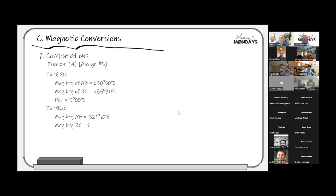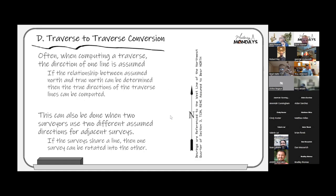I'll skip the more complicated problem and leave it for you to work through. It basically goes through figuring out the relationship for one line and carrying it over to the next — like if you're doing successive lines on a metes and bounds description, how you carry the declination from one line into the next.